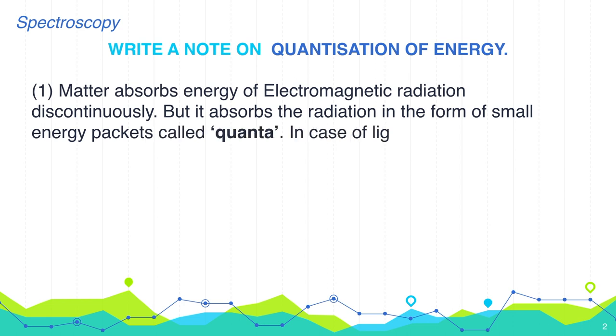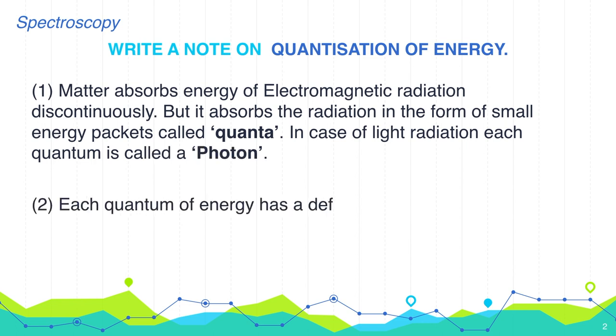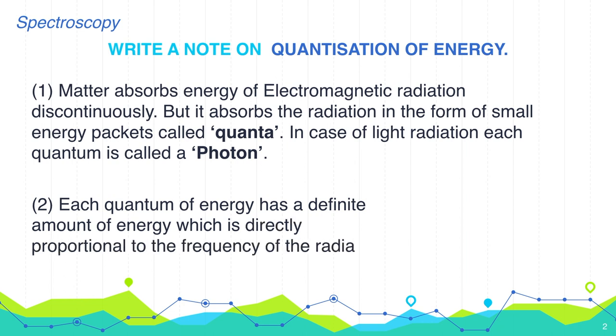In case of light radiation, each quantum is called a photon. Each quantum of energy has a definite amount of energy which is directly proportional to the frequency of radiation emitted or absorbed.